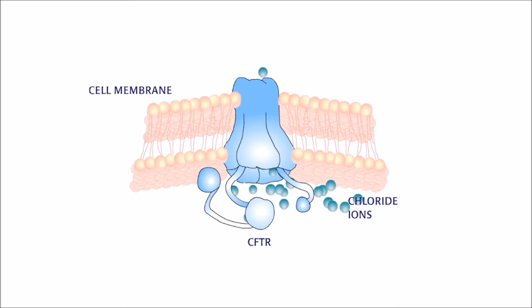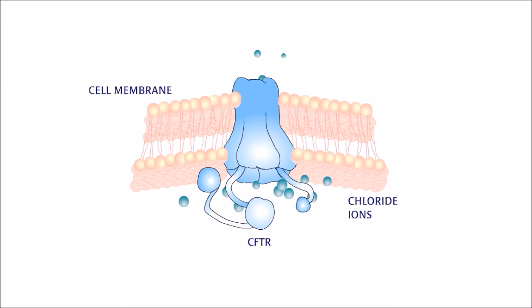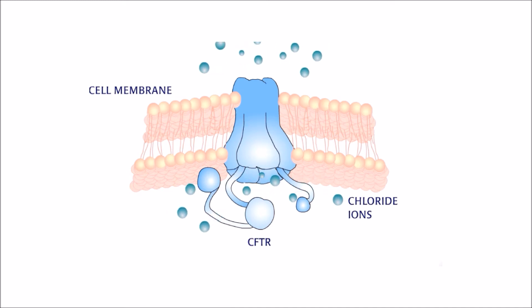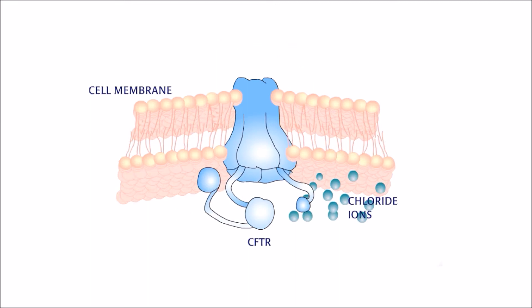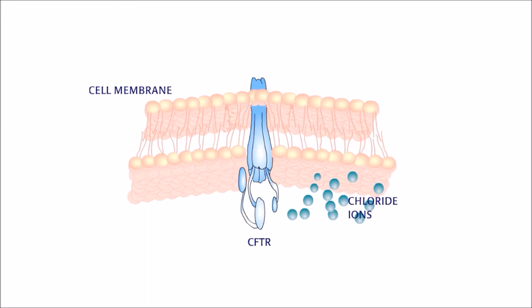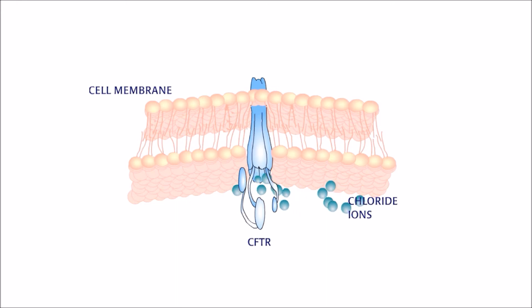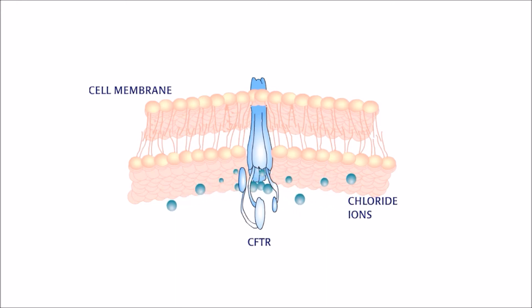When there is no mutation in the gene, the instructions produce a CFTR that sits in the membrane of certain cells and controls the passage of chloride ions in and out of the cell. When the gene is mutated, the faulty instructions produce a CFTR that does not work and chloride ions cannot pass through the membrane.